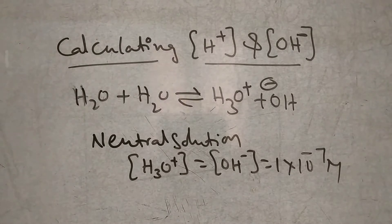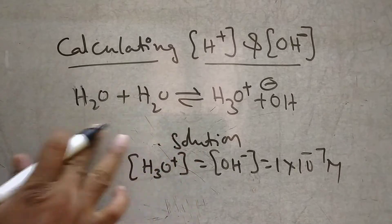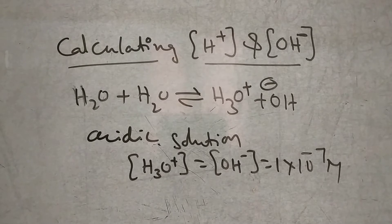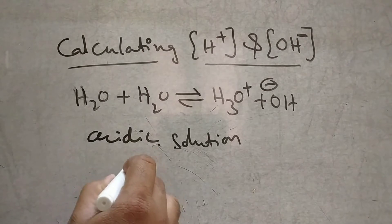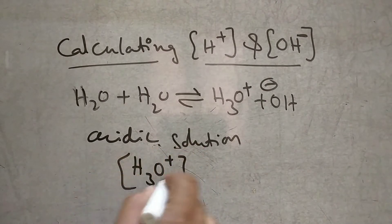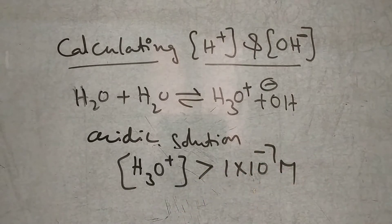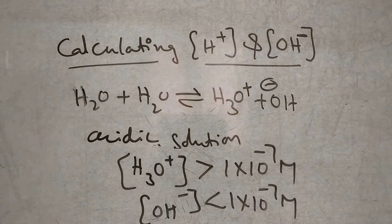Suppose if it is an acidic solution, naturally the concentration of H3O plus ions increases — that is, they are greater than 10 to the power of minus 7 M. And here, OH minus ion concentration is less than 1 into 10 to the power of minus 7 M. So, H3O plus ions are greater in an acidic solution.